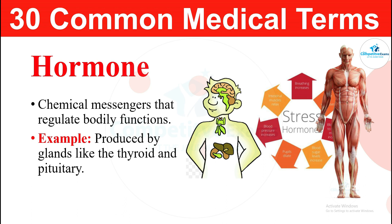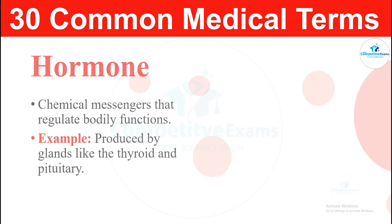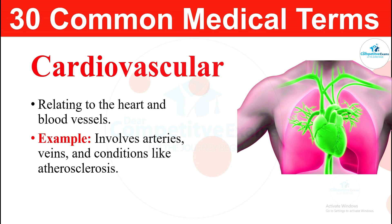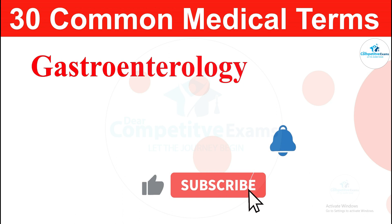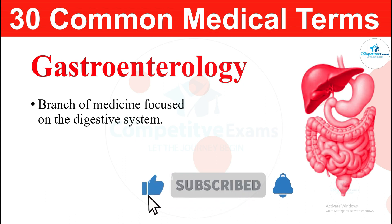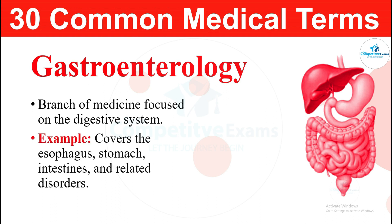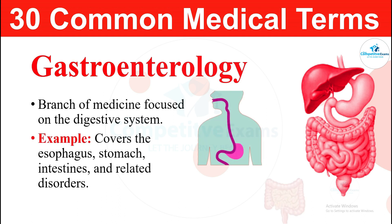The next medical term: cardiovascular. Cardiovascular relates to the heart and blood vessels. It involves arteries, veins, and conditions like atherosclerosis. The next term: gastroenterology. Gastroenterology is a branch of medicine focused on the digestive system. It covers the esophagus, stomach, intestines, and related disorders.